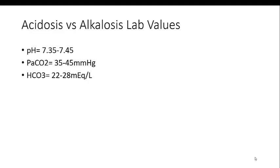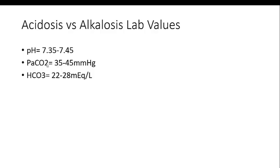The first thing you need to understand are the lab values associated with acidosis and alkalosis — these arterial blood gas values. First, maybe the most important, is the pH: 7.35 to 7.45. The blood must stay within those pH levels; otherwise, bad things start to happen in the human body. The partial pressure of carbon dioxide is 35 to 45. As you increase the partial pressure of CO2, it becomes more acidic, because you're adding more carbonic acid to the buffer system. The converse is true for HCO3, or bicarbonate — as you increase bicarbonate in the blood, it becomes more basic.